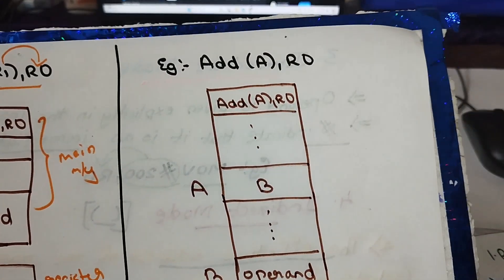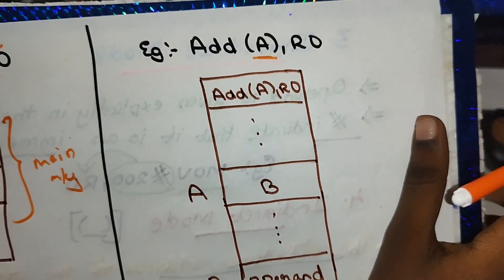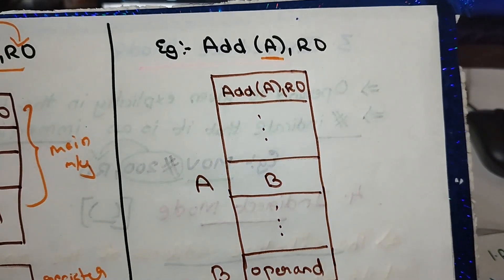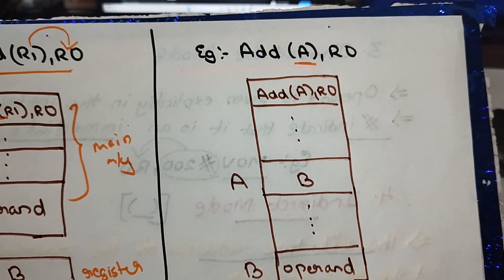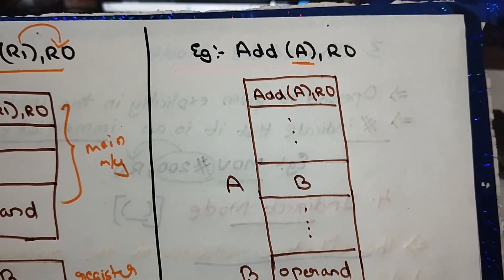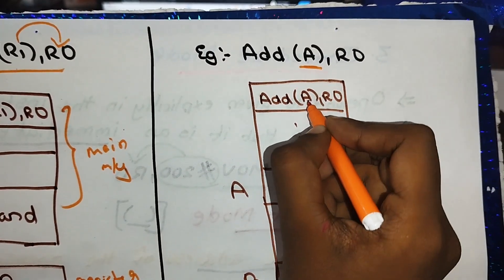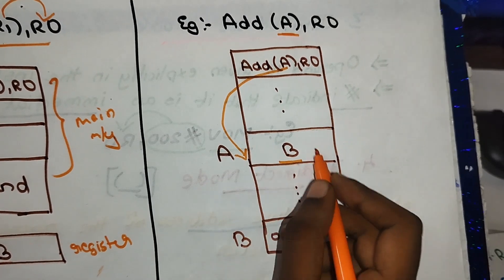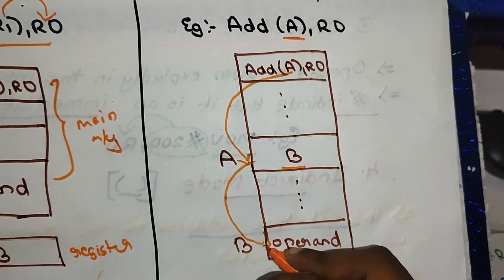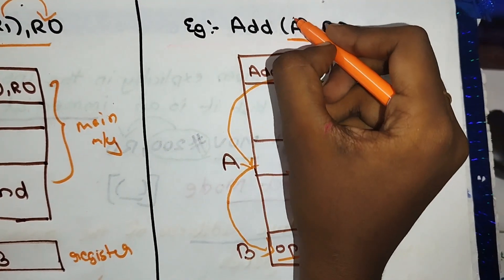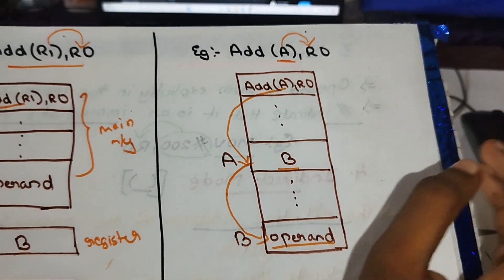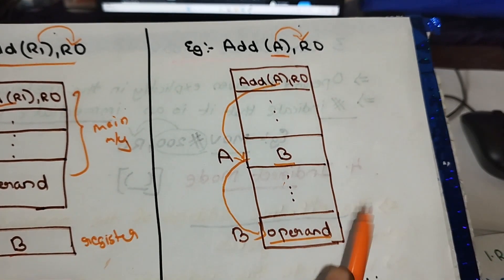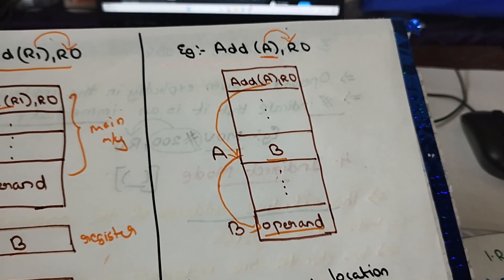The second type of indirect addressing uses a memory location — specifically, the accumulator. In this case, ADD (A), R0 — where A is the accumulator. The accumulator points to the memory location, the data at that location is the operand, and the result is stored in R0. The indirect addressing mode is very important, covering both general purpose register and memory location variants.